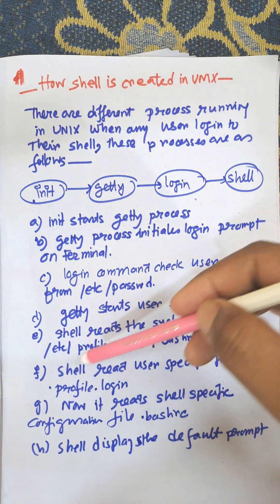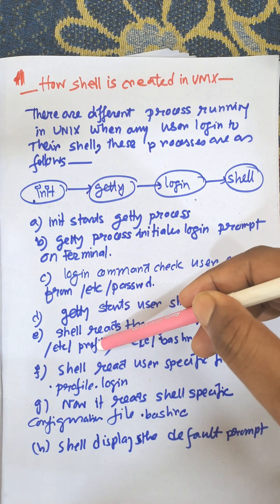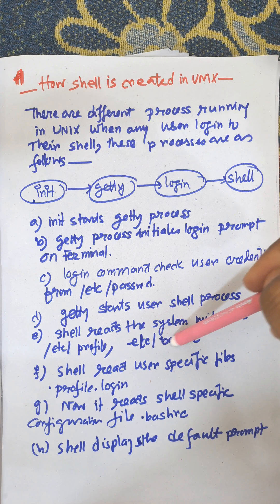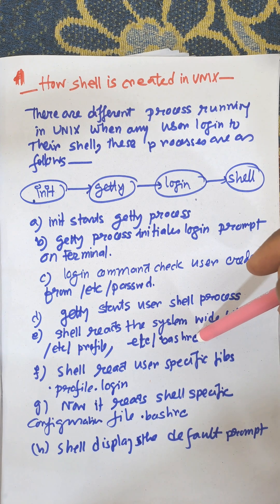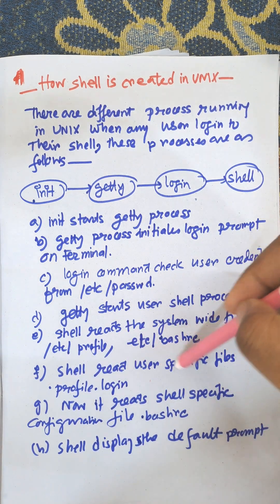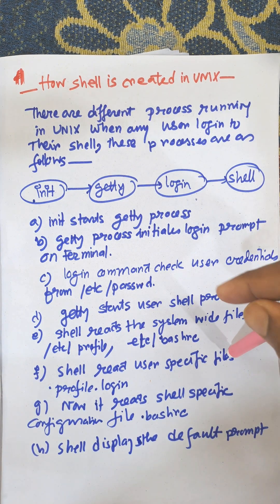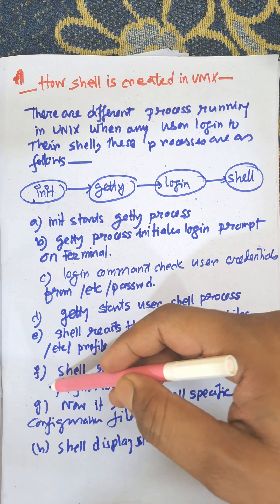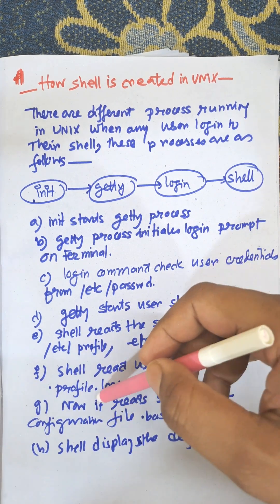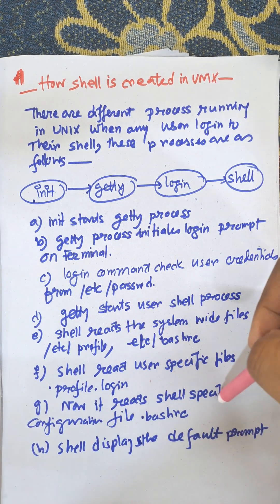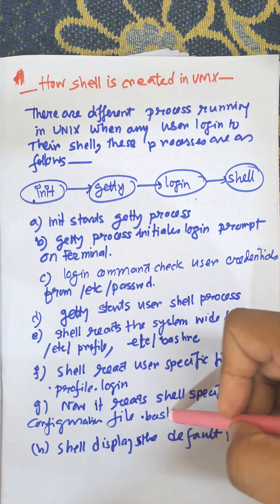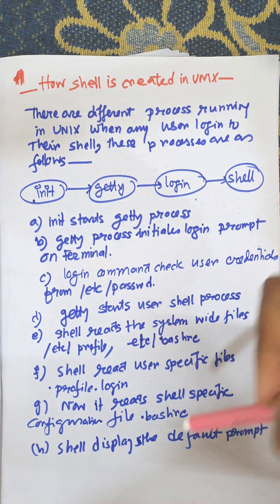The shell reads system-wide files: /etc/profile and /etc/bashrc. Then the shell reads user-specific profile files from .profile and .login. Finally, it reads the shell-specific configuration file .bashrc.